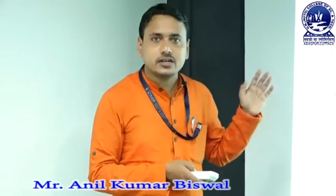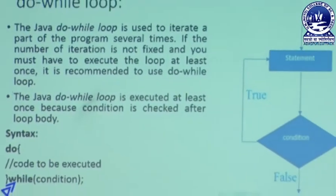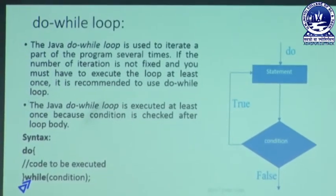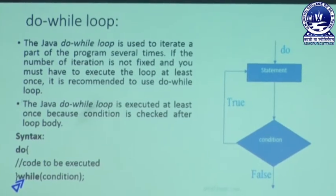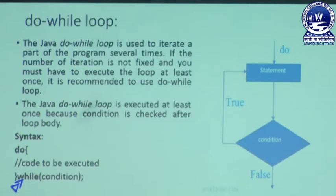The next looping structure is known as the do-while loop. What is the meaning of the do-while loop concept? It is specially used to iterate a part of the program several times if the number of iterations is not fixed, and you must execute the loop at least once. It is recommended to use do-while loop. In the do-while loop, the statement is executed at least once because the condition is checked after the loop body. When your do-while loop statement is executed, first you execute the statement, then you check the condition.